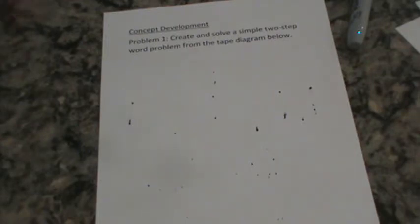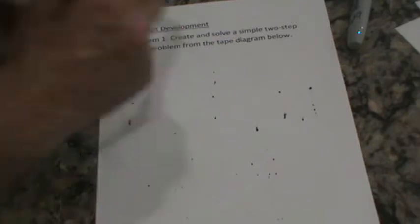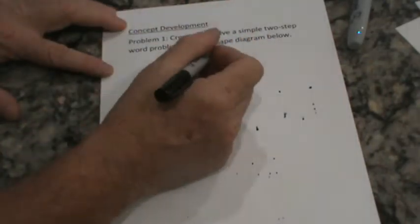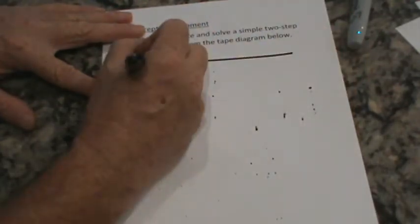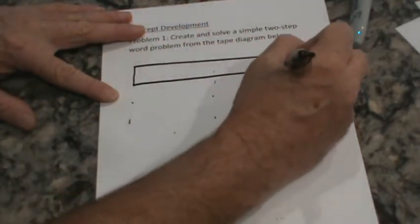It says, create and solve a simple two-step word problem from the tape diagram below. I don't see a tape diagram below so we're gonna make one. And this is copycat time. You guys are copying right along.